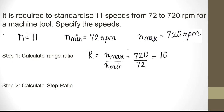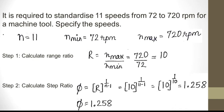Second step is to calculate the series factor, or geometric step ratio. The formula is φ = R^(1/(n−1)) = 10^(1/(11−1)) = 10^(1/10), which turns out to be 1.258. So the step ratio φ = 1.258.